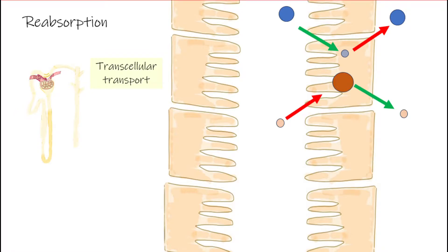There may be substances that are passively moved across the apical membrane, and this passive movement may provide energy to allow the active transport of another substance. That is an example of secondary active transport. And if both substances are moving in the same direction, that would be co-transport.